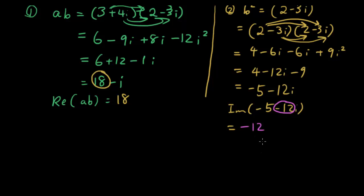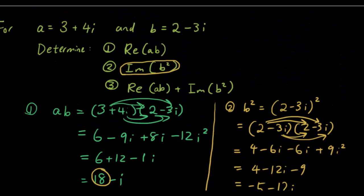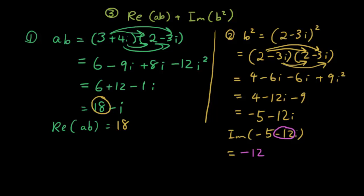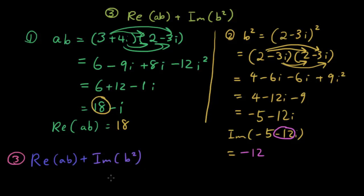So it's just negative 12, and that's the answer. Number 3: the real part of ab plus the imaginary part of b squared. So let's add them together using the answers from questions 1 and 2. The real part of ab plus the imaginary part of b squared is equal to 18 plus negative 12, and the answer is 6.